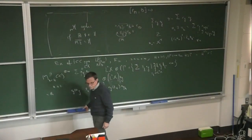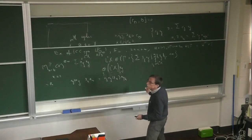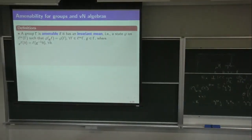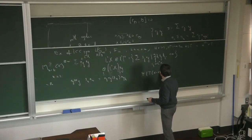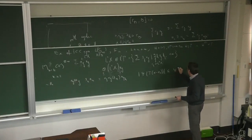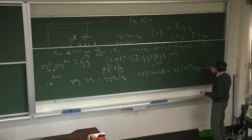Also as a corollary: if you have a finite von Neumann algebra M generated by an amenable subalgebra B together with a group of unitaries in M that normalize B, with Γ amenable, and M is generated by B and these normalizing unitaries, then M is amenable. In particular, whenever you have an amenable group acting on a probability measure space, the group measure space construction gives an amenable von Neumann algebra.